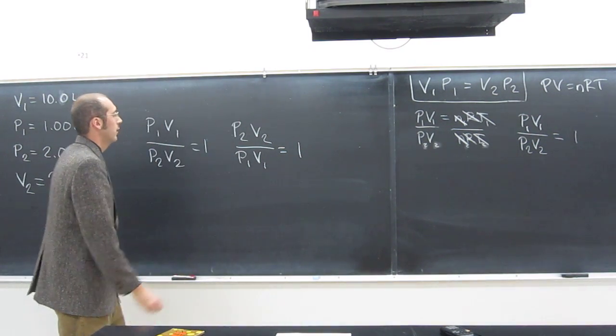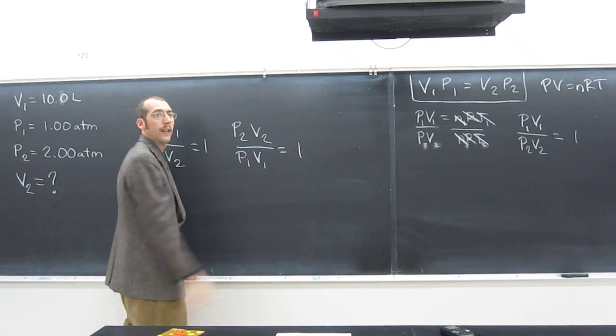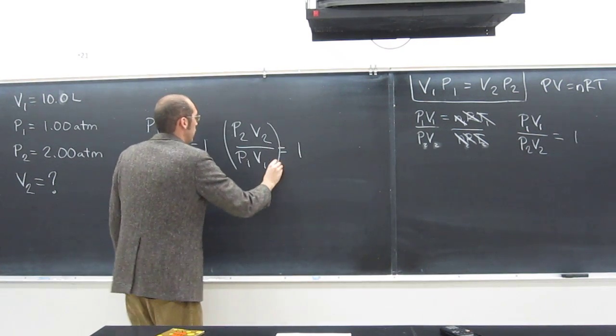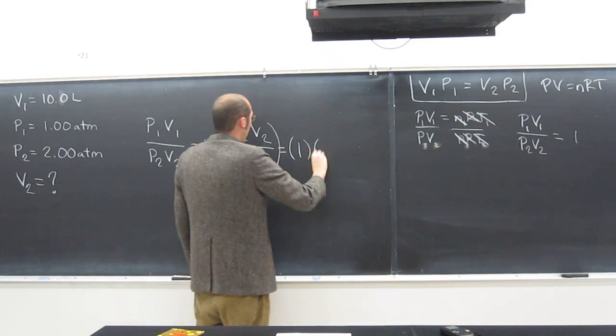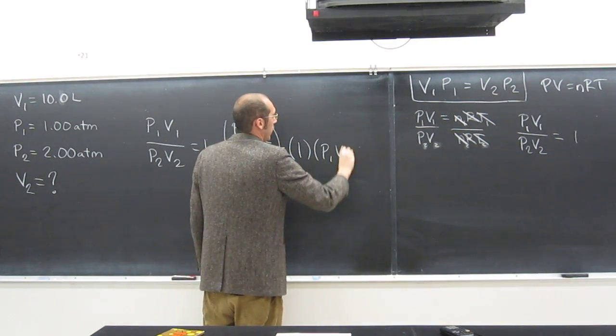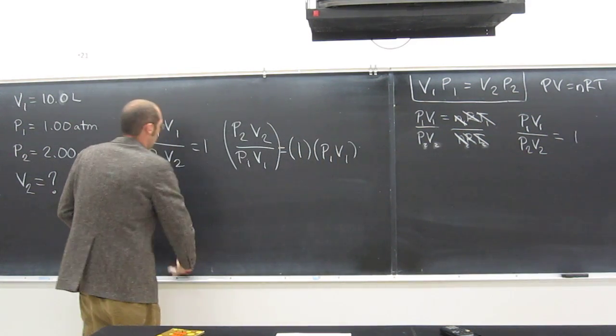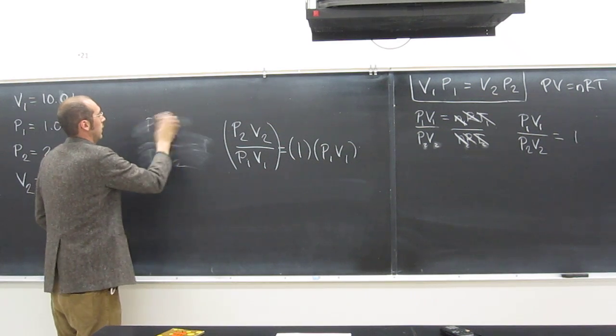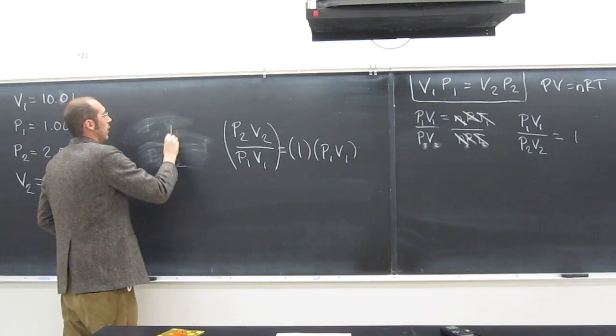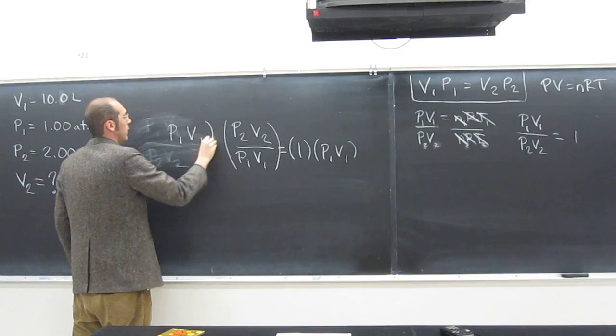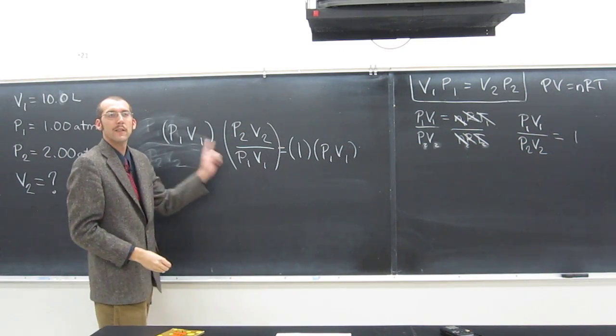And then what I can do is multiply like that, right? So multiply both sides by P1 V1. I'm going to erase this one. So I'm going to erase this one. P1 V1. Right? And that's going to cancel that out with that.